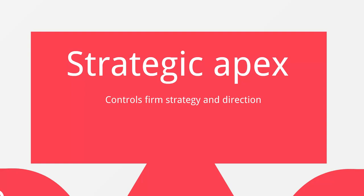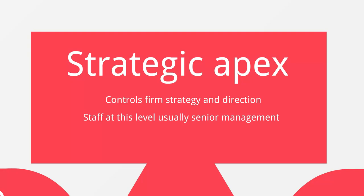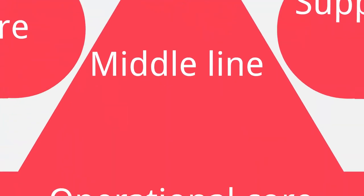The people normally at the strategic apex level are the senior management and staff, which makes sense because it's the senior management that set the direction and the strategy of the firm. Remember, what we're looking at here is a visualization of how an organization can break labor into specific tasks. This task of controlling firm strategy and direction is done by senior management — that's how this labor has been broken down.